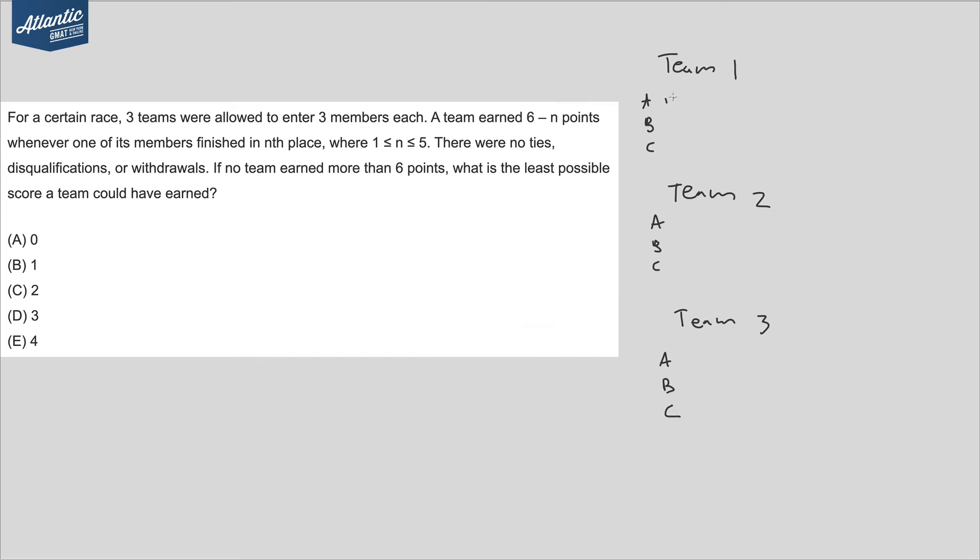Let's give first place to the first member of Team 1, and that would be five points. Then we only have one more point to give to Team 1 because we can't go above six, so that would be fifth place for one point. Then we can't have any more points for Team 1, so let's give Team 1 ninth place which would be zero points. So Team 1's all set, got the maximum of six points.